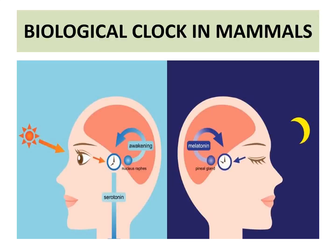Whereas during night, the hormone produced is melatonin. These two important hormones — serotonin during daytime and melatonin during nighttime — are responsible for the biological clock in humans.